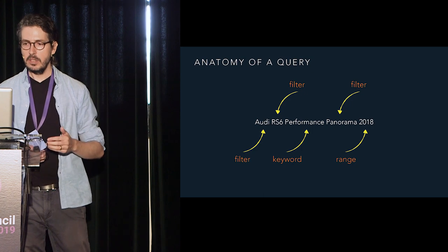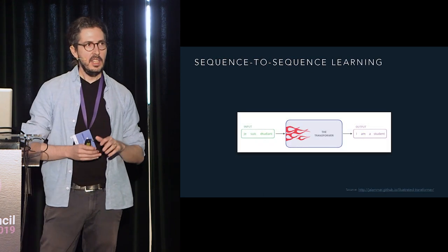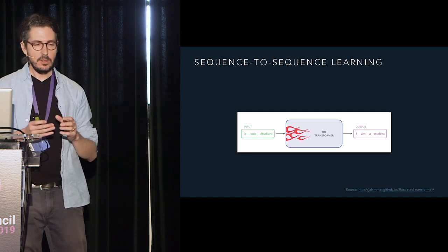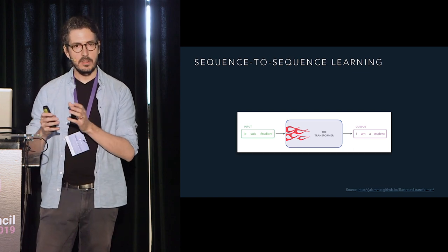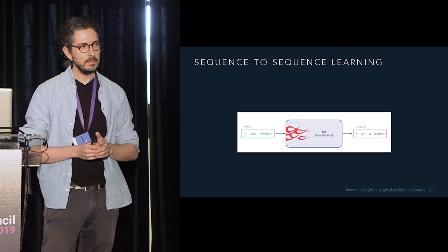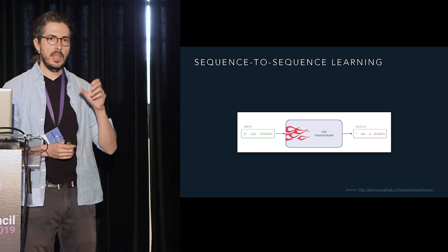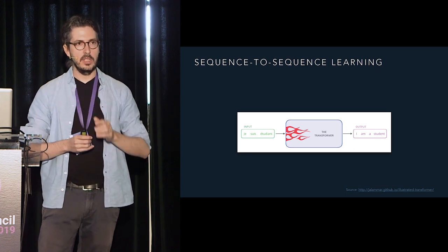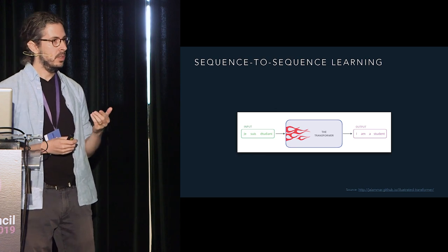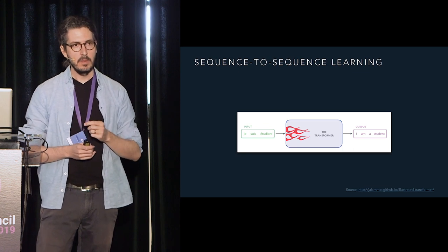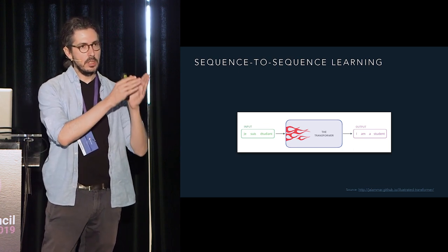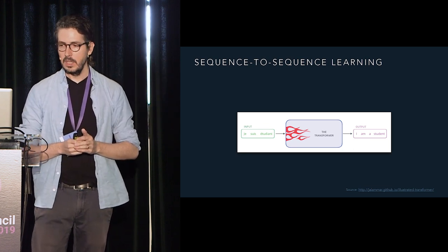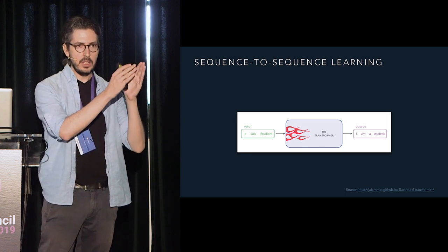From a machine learning perspective I decided to approach this as a sequence-to-sequence problem. Sequence-to-sequence learning is a very generic framework that allows you to go from a variable-length input sequence to a variable-length output sequence. Typically this uses an encoder-decoder architecture: an encoder looks at the inputs and produces embeddings, and a decoder looks at those embeddings and produces an output sequence. For a long time the go-to method was recurrent neural networks, which process input one position at a time — making them inherently sequential and slow.